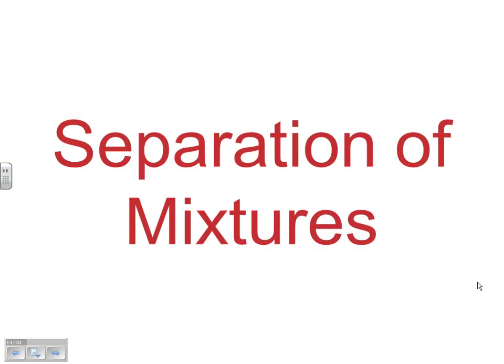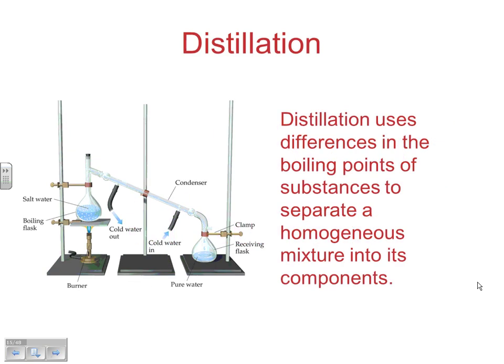Different methods of separating mixtures include distillation, one of the most fundamental. It uses differences in boiling point to separate substances. When you heat a saltwater mixture, water has a much lower boiling point than salt, so water boils off first as a gas, is recooled back into a liquid, and what's collected on the far side is pure water while the salt is left behind.